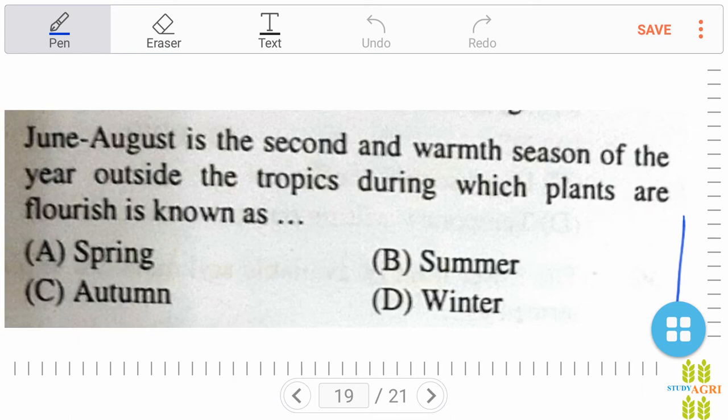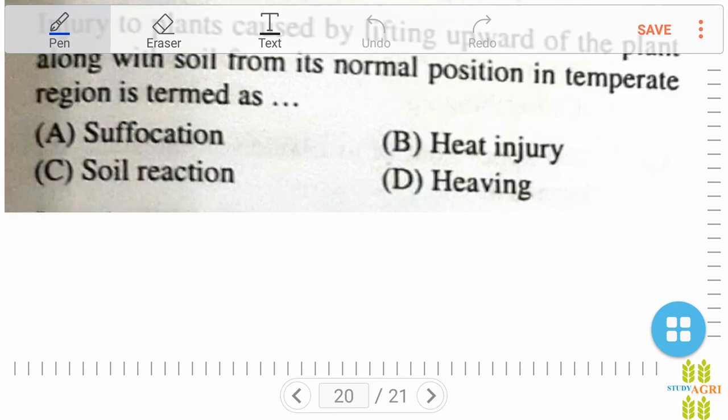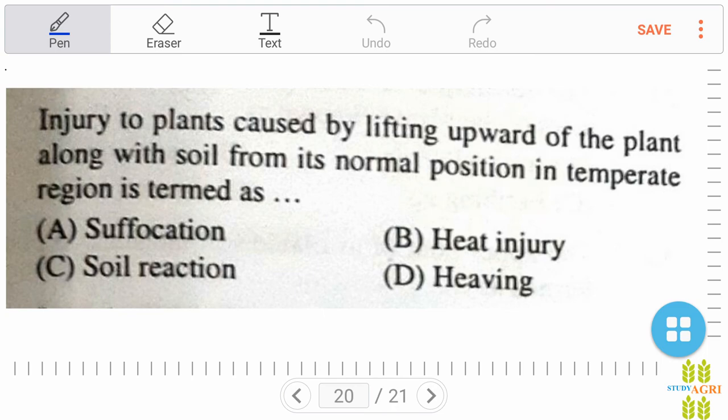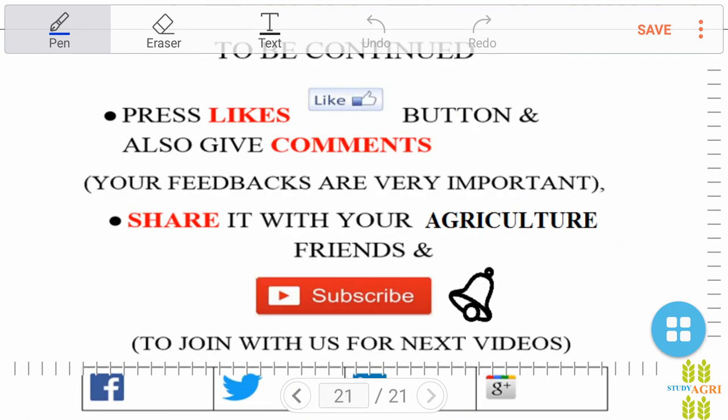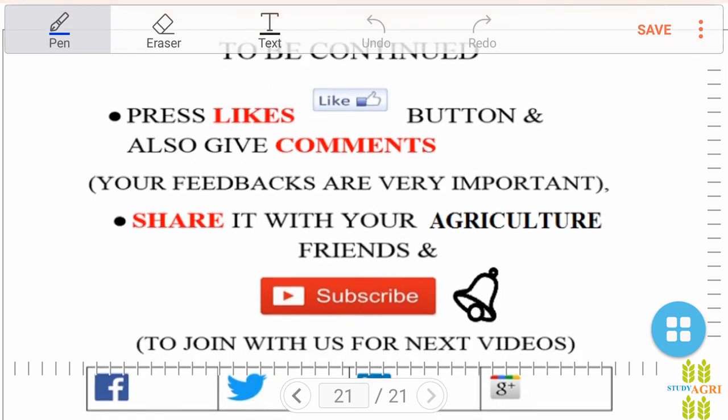Injury to plants caused by lifting upward of the plant along with soil from its normal position in temperate regions is termed as suffocation, soil rejection, heat injury, or heaving? Right answer is option D, heaving. Well, this is the end of the video, so to be continued.